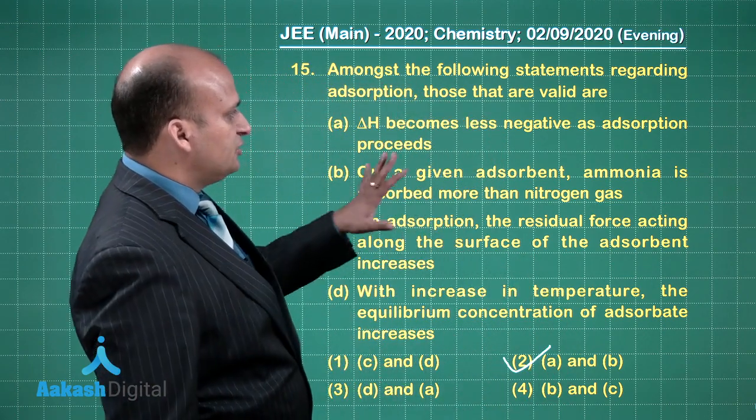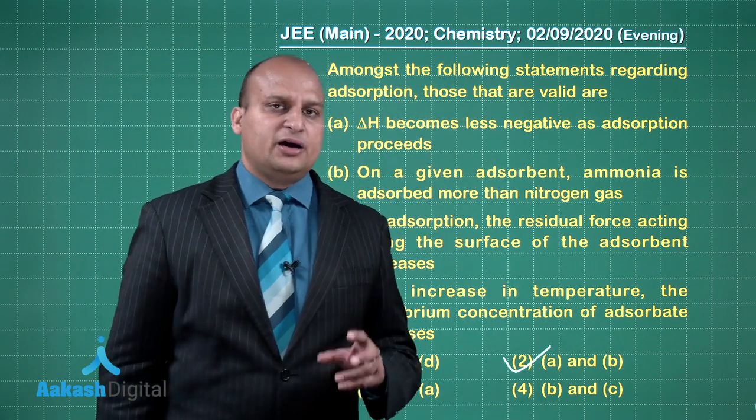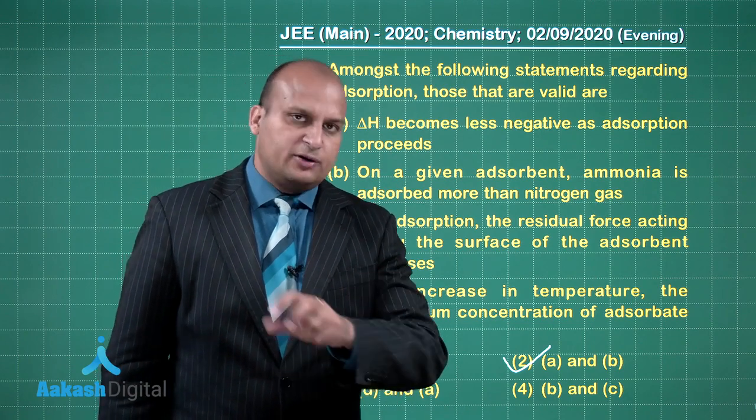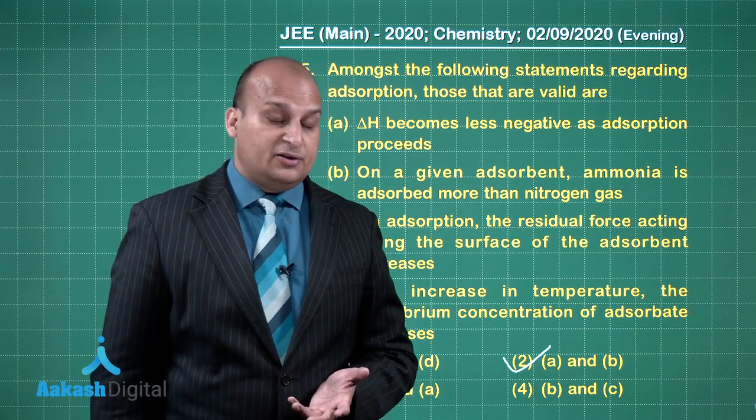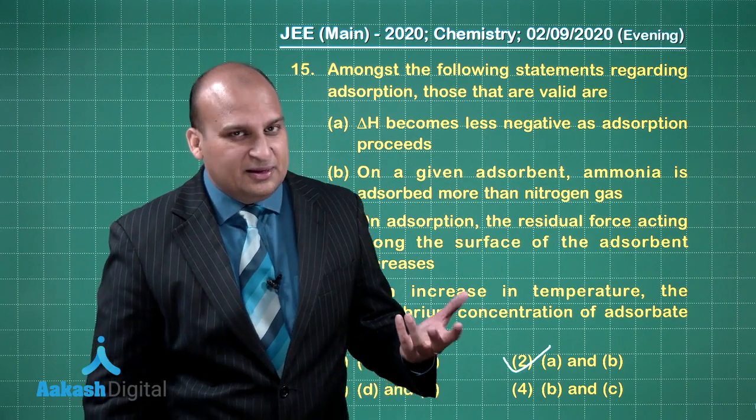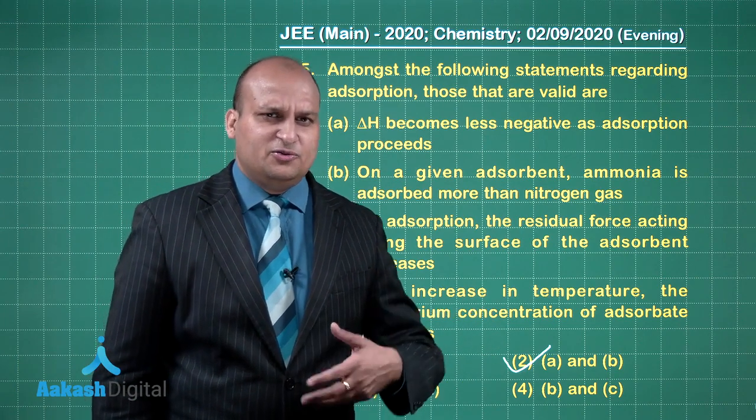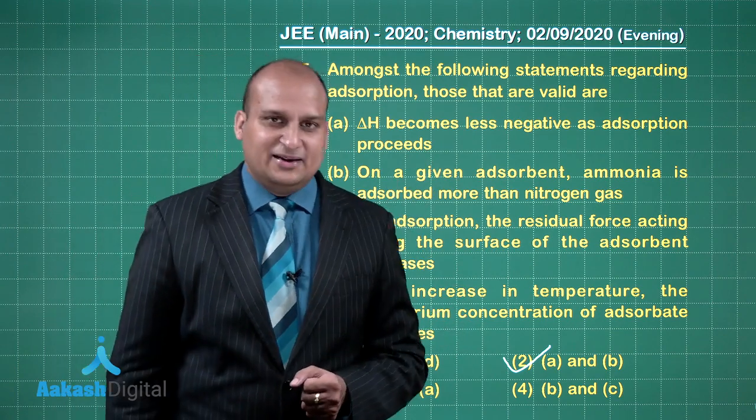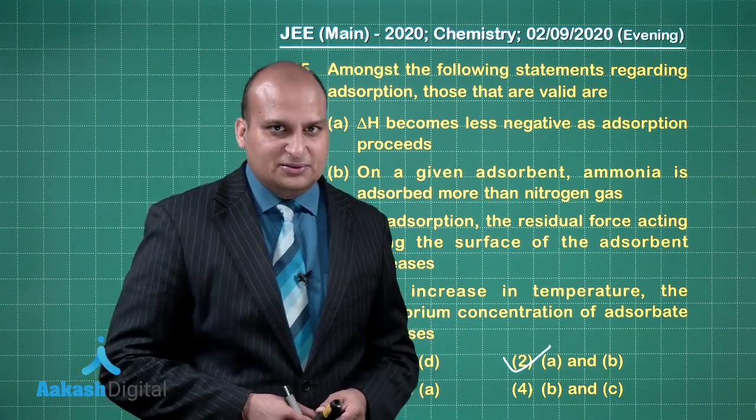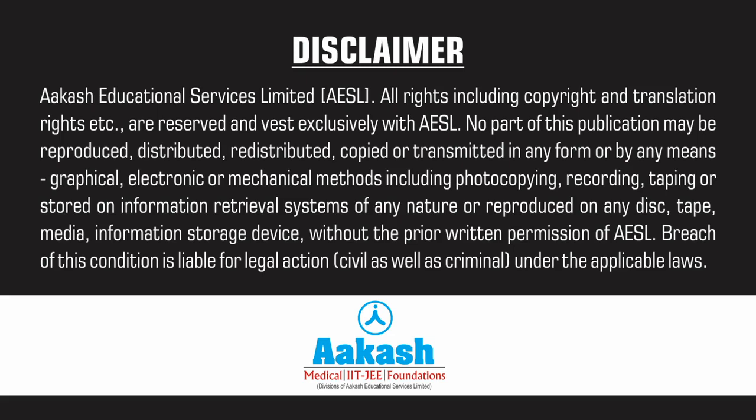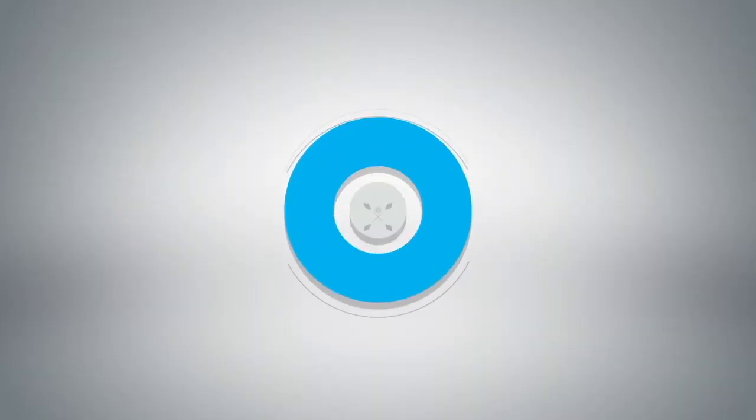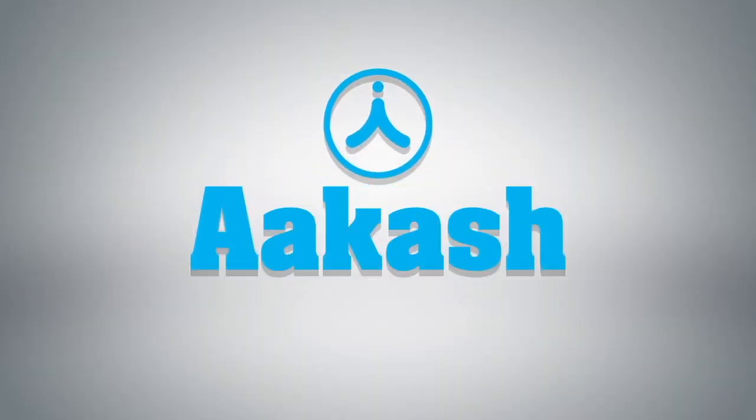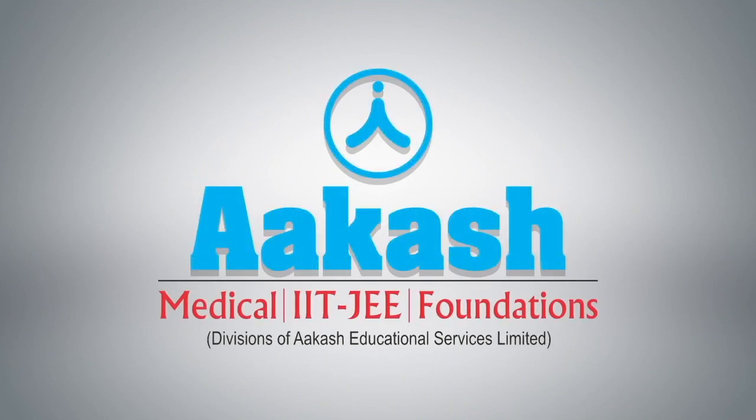So dear friends, this question actually is signifying that you have to go to the micro level in chapters like surface chemistry, wherein generally people feel oh, it is very easy, only you have to mug up the things. So it is more than mugging, you have to understand all this part. Let us go to the next question.